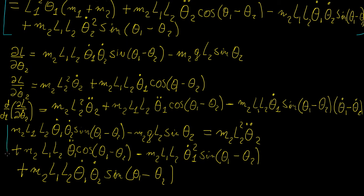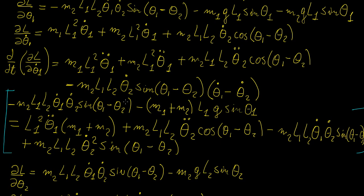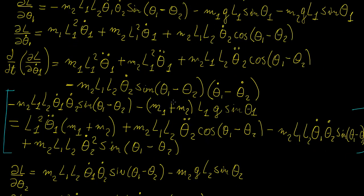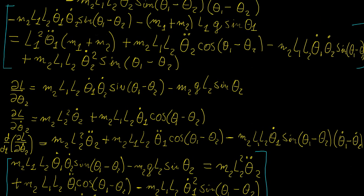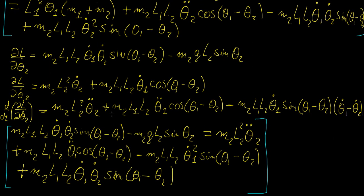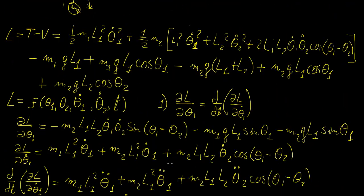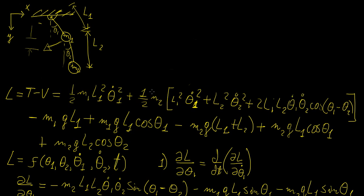We've now derived both equations of motion that characterize the double pendulum system. They're really complicated, and had we used Newtonian mechanics we would have arrived at the same equations — but this Lagrangian method lets us check each step more systematically using the energies. Once you have these two equations, it's just a matter of rearranging to solve for the accelerations. We'll continue with more examples of Lagrangian mechanics.